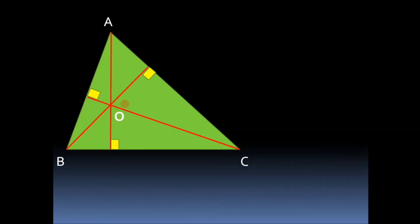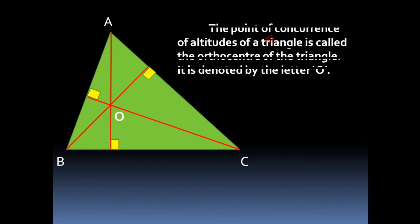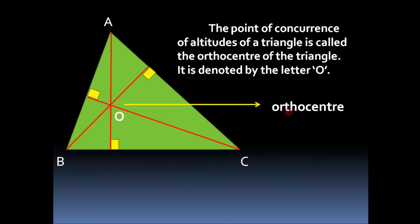Let us have the definition of the point of concurrence of the three altitudes of a triangle. The point of concurrence of altitudes of a triangle is called the orthocenter of the triangle, and it is generally denoted by the letter O. For triangle ABC, as the three altitudes intersect at point O, O is called the orthocenter.